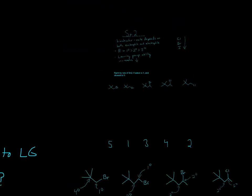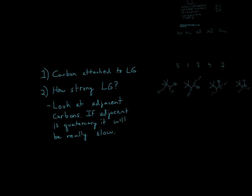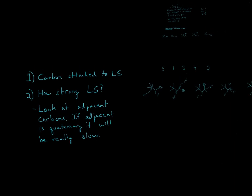And then I've written down what I just said right here. So the first thing you want to look at is the carbon attached. Look at if it's primary or secondary. And then look at how strong is the leaving group. And this is the exception to the rule. Look at adjacent carbons. Even if it's a primary carbon, but if the adjacent carbon is a quaternary, it will be really slow. So I hope that helped, and thanks for watching.